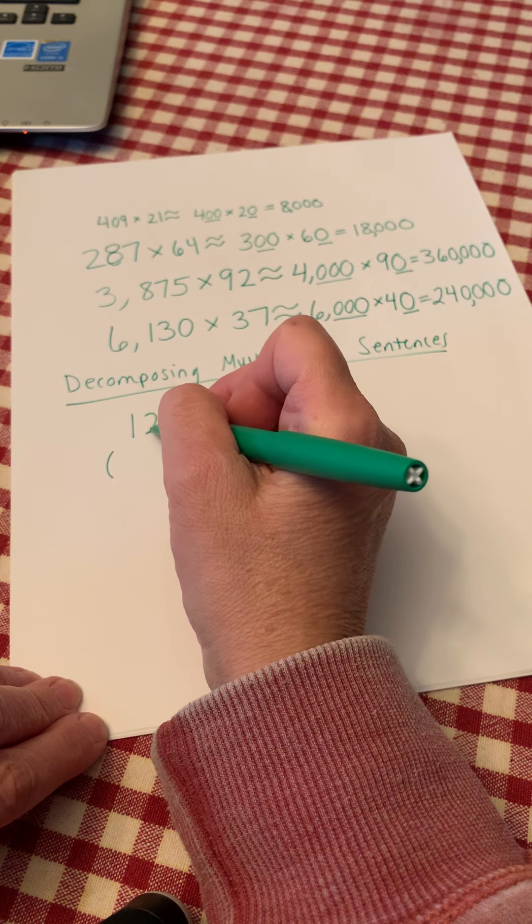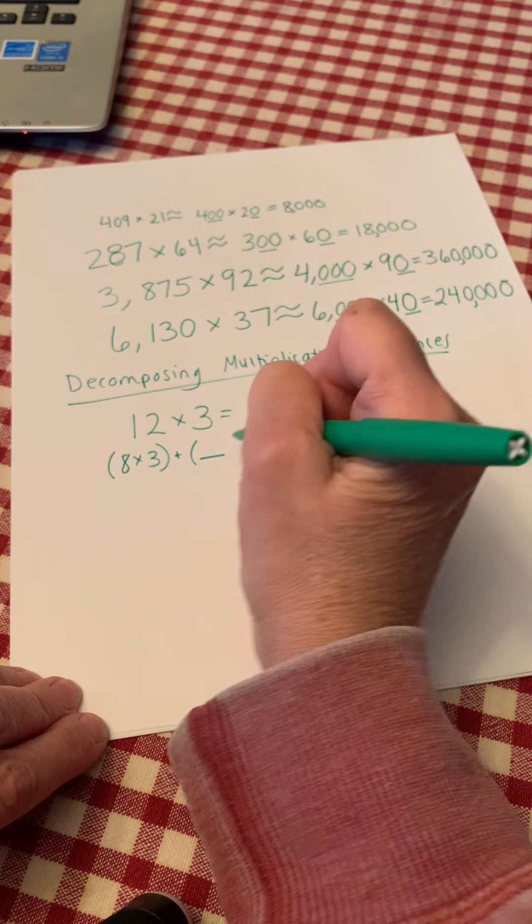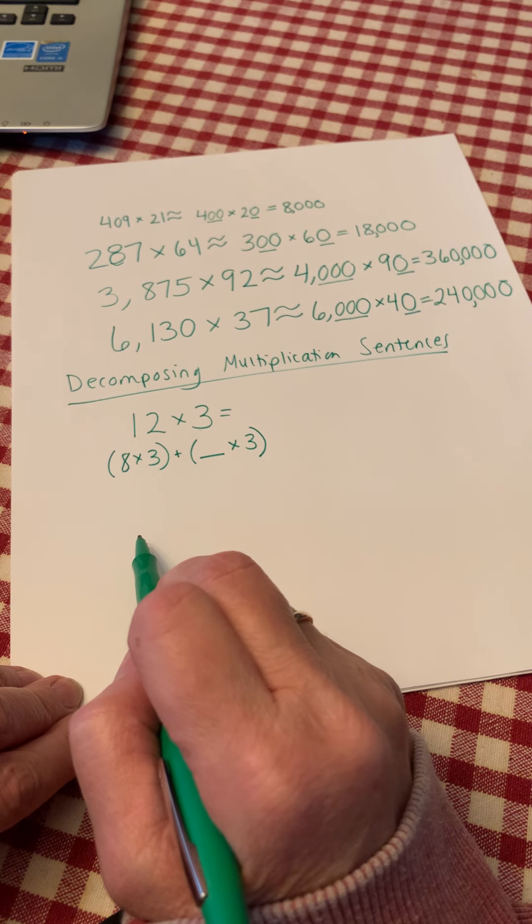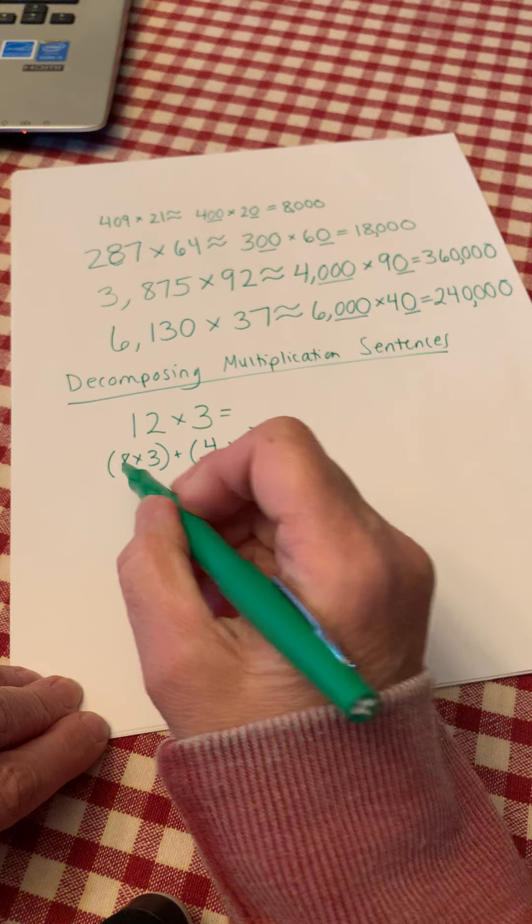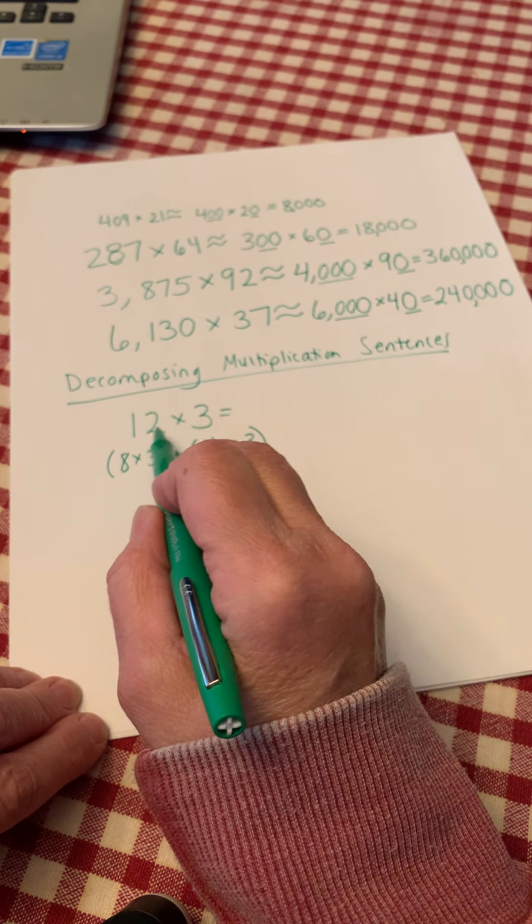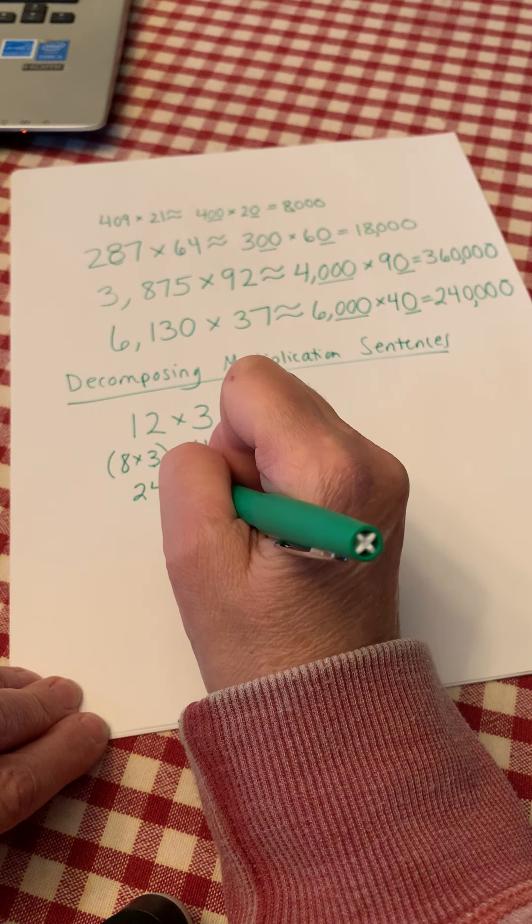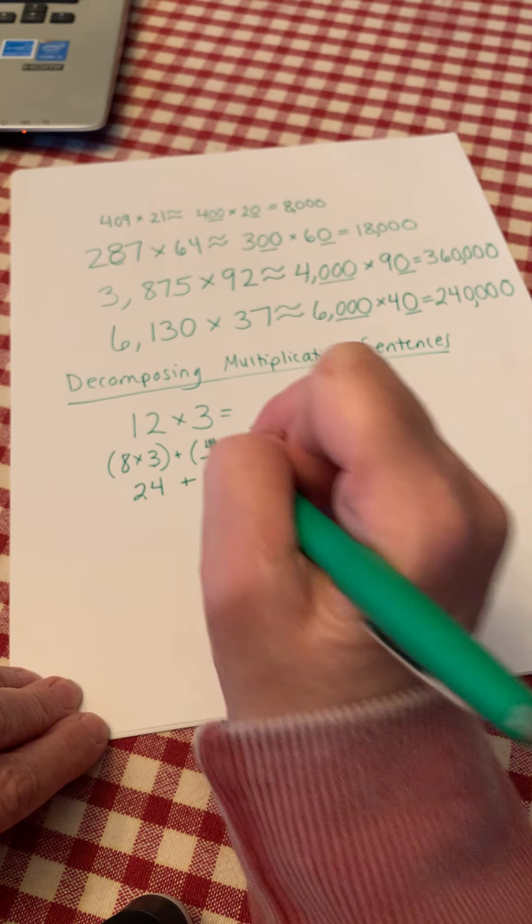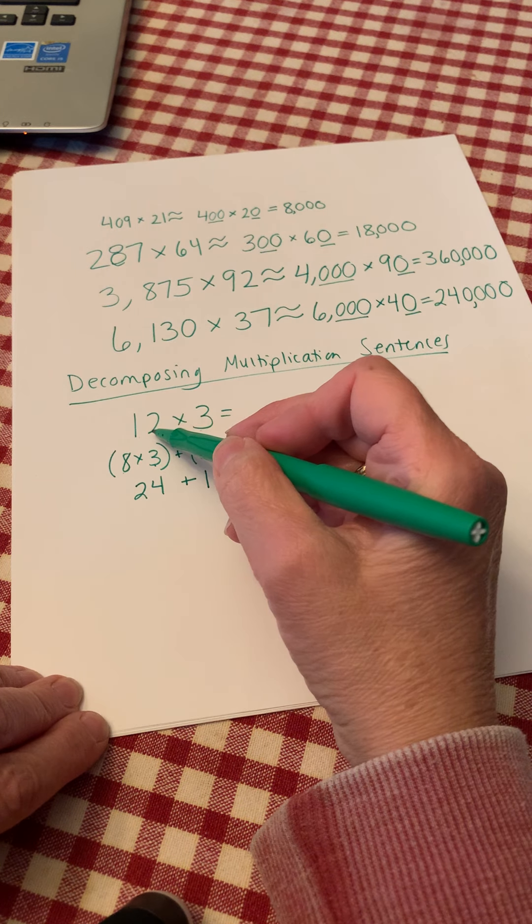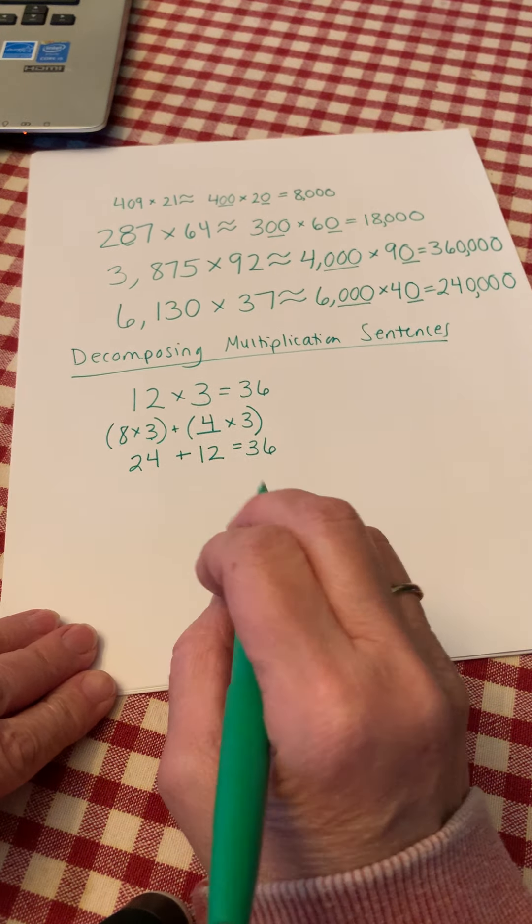For this one I want you to think of 12 3s and how we could decompose 12 to make this an easier multiplication sentence. If you didn't know your 12 times tables. So 12, I could decompose that. And I could say instead of saying 12 3s, I could say 8 3s plus how many 3s? 8 plus what number will give me 12? That's right, 4. 8 times 3 plus 4 times 3, or 8 3s plus 4 3s is the same as 12 3s. 8 times 3 is 24 plus 4 times 3 is 12, 24 plus 12 is 36. So we know 12 times 3 is 36. It's just a different strategy to help you with multiplication problems.